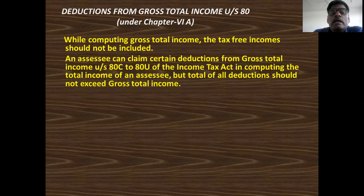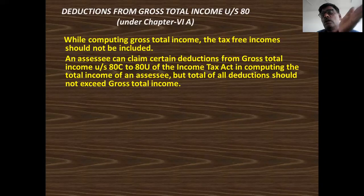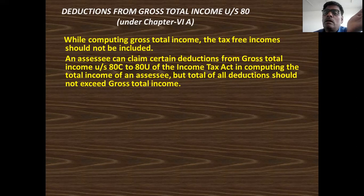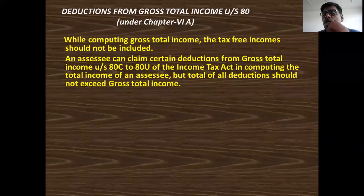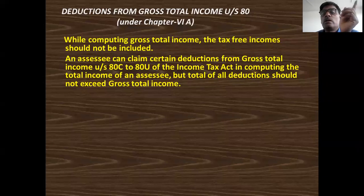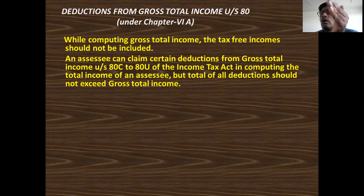An assessee can claim certain deductions from the gross total income under Section 80C to 80U. These sections explain the deductions eligible to deduct from the gross total income. But the total of all deductions should not exceed the gross total income — remember this. Your deduction should not be more than the gross total income.